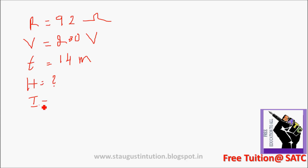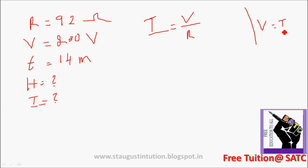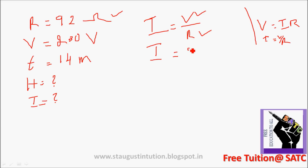Current is equal to — according to Ohm's law — V by R. Current is equal to V by R. Current is equal to voltage divided by resistance. Voltage is equal to 30, divide by resistance equal to 90. So the answer is 2.5 A.